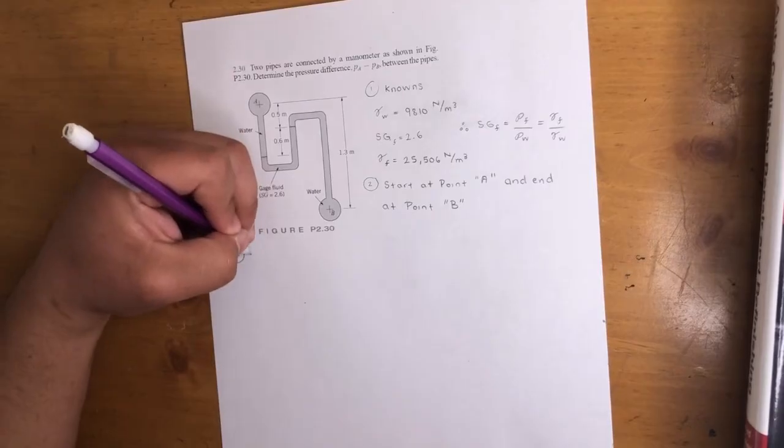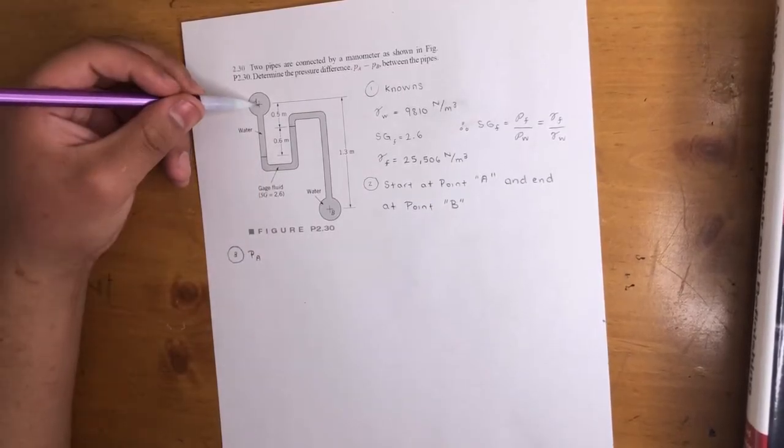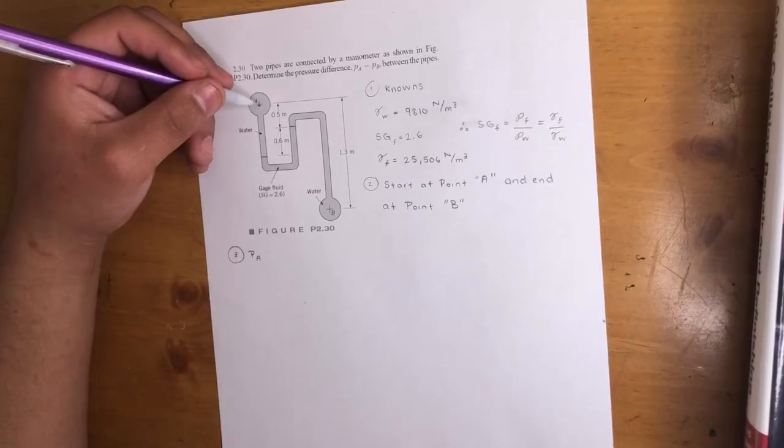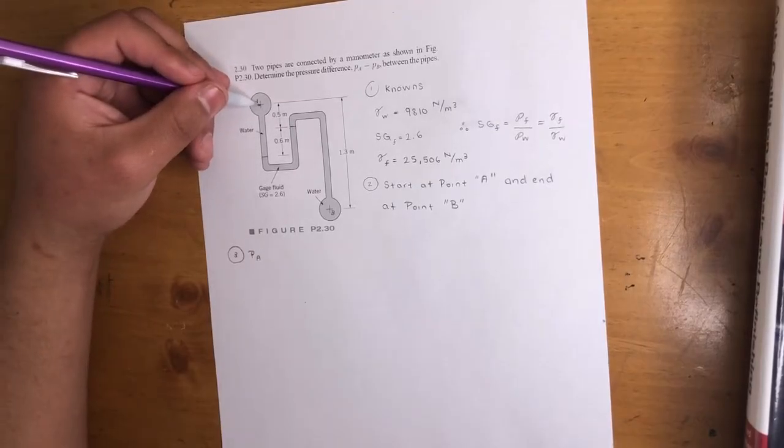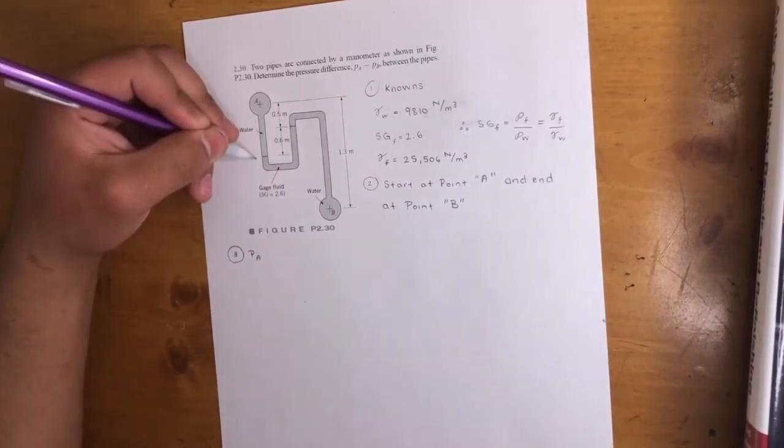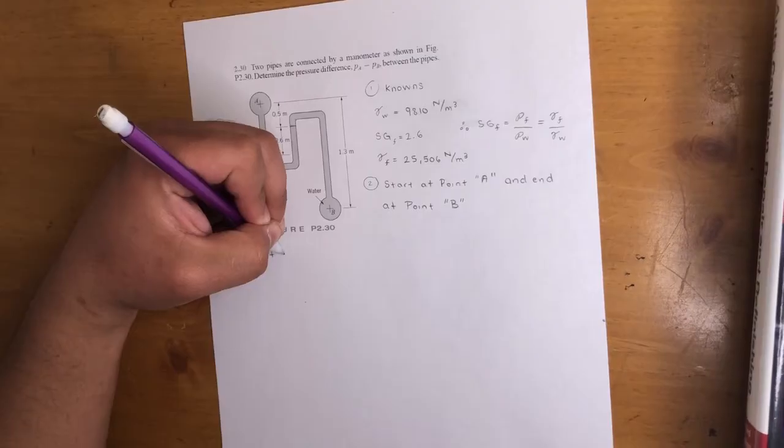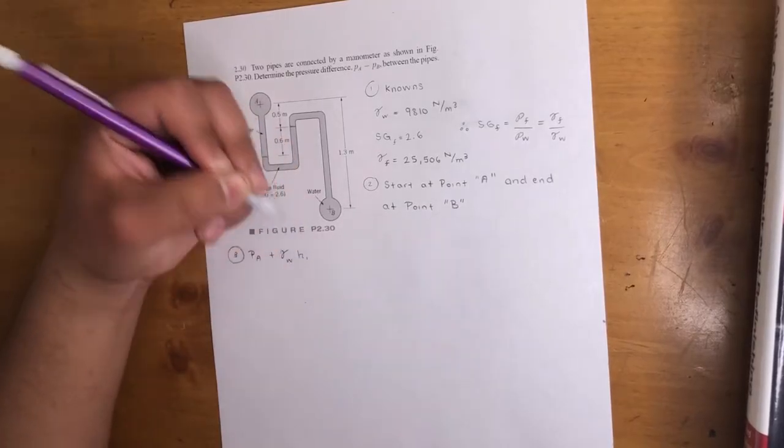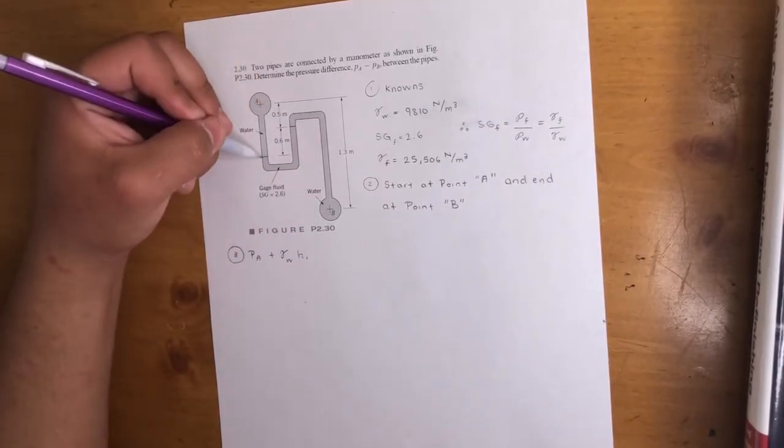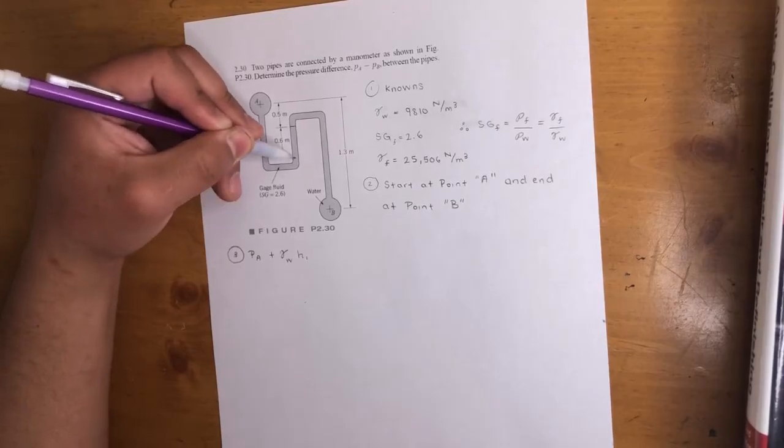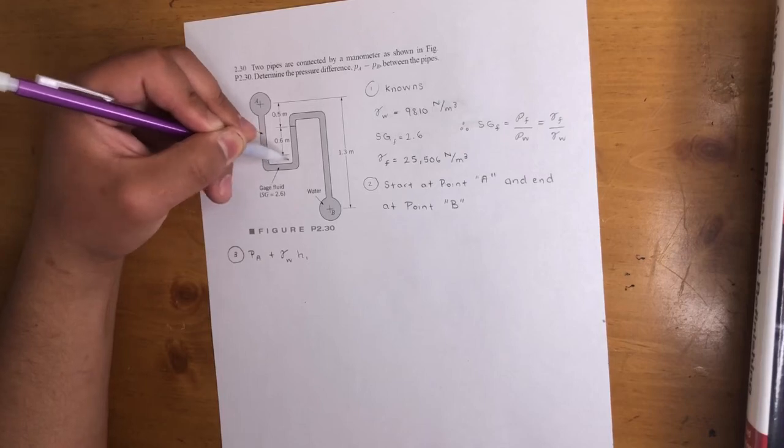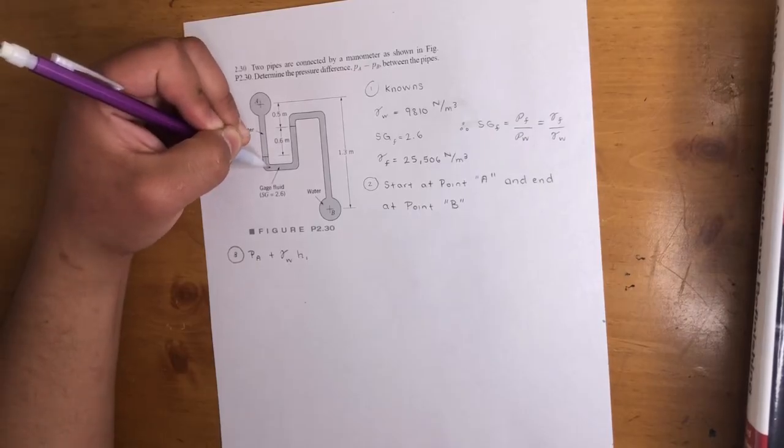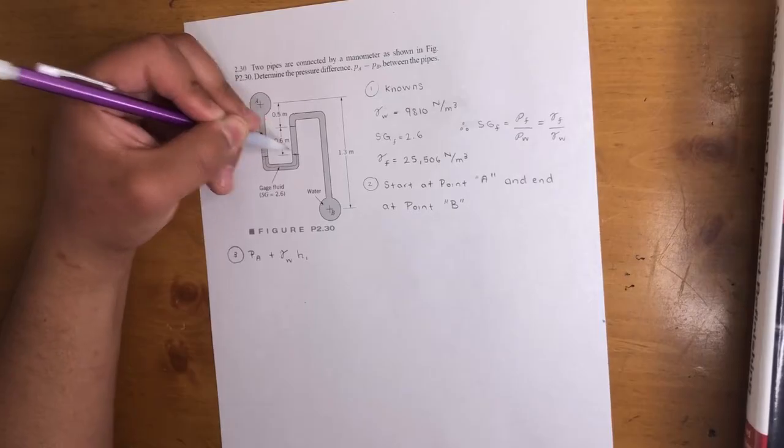Start at point A, so we'll put pressure at A. You work your way down to the first separation between water and the fluid. So the pressure from point A all the way down here, we're going down so that's a positive. It's the gamma of the fluid, which is water, times your height. In this case I'll just put height one for now. We know the pressure here is the same here because it's the same fluid. The pressure here will be the same pressure here. This one along this line is all the same pressure.